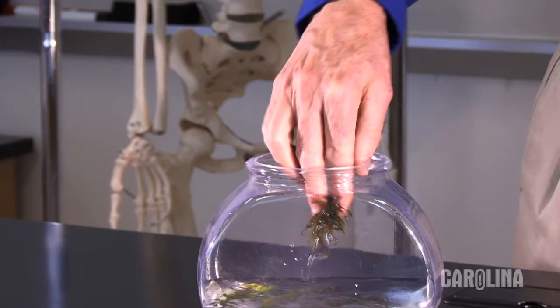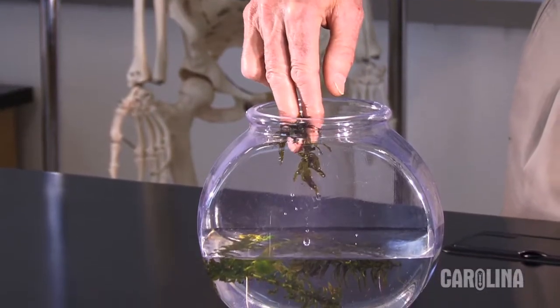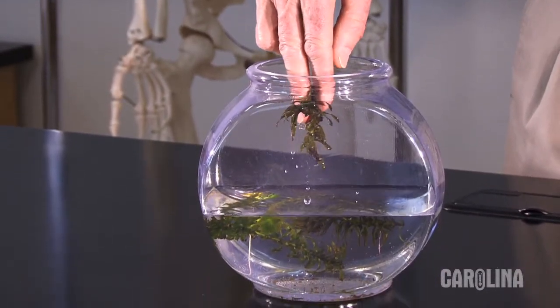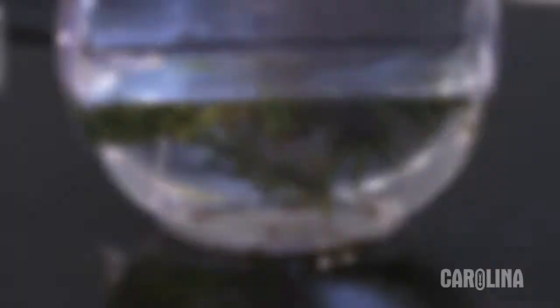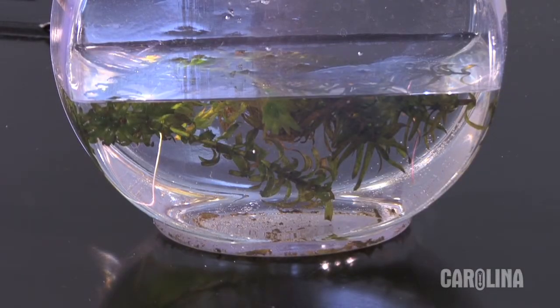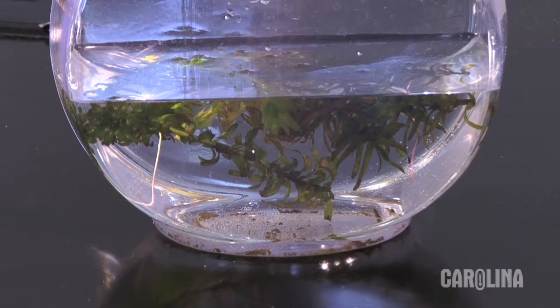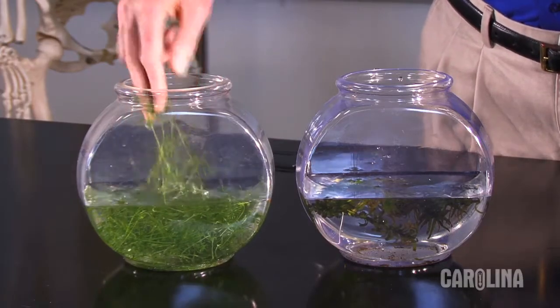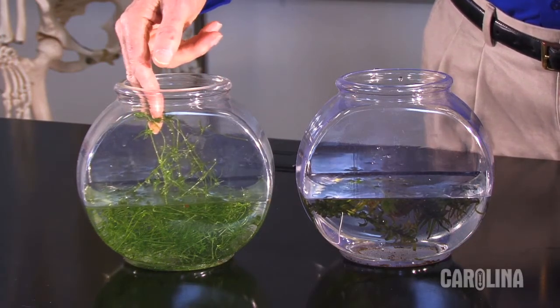Elodea, an aquatic plant also called waterweed, is often used to study photosynthesis. Unfortunately, Elodea densa is non-native, and some states ban Carolina from shipping it, so we'll use Cara, a native plant that isn't invasive.